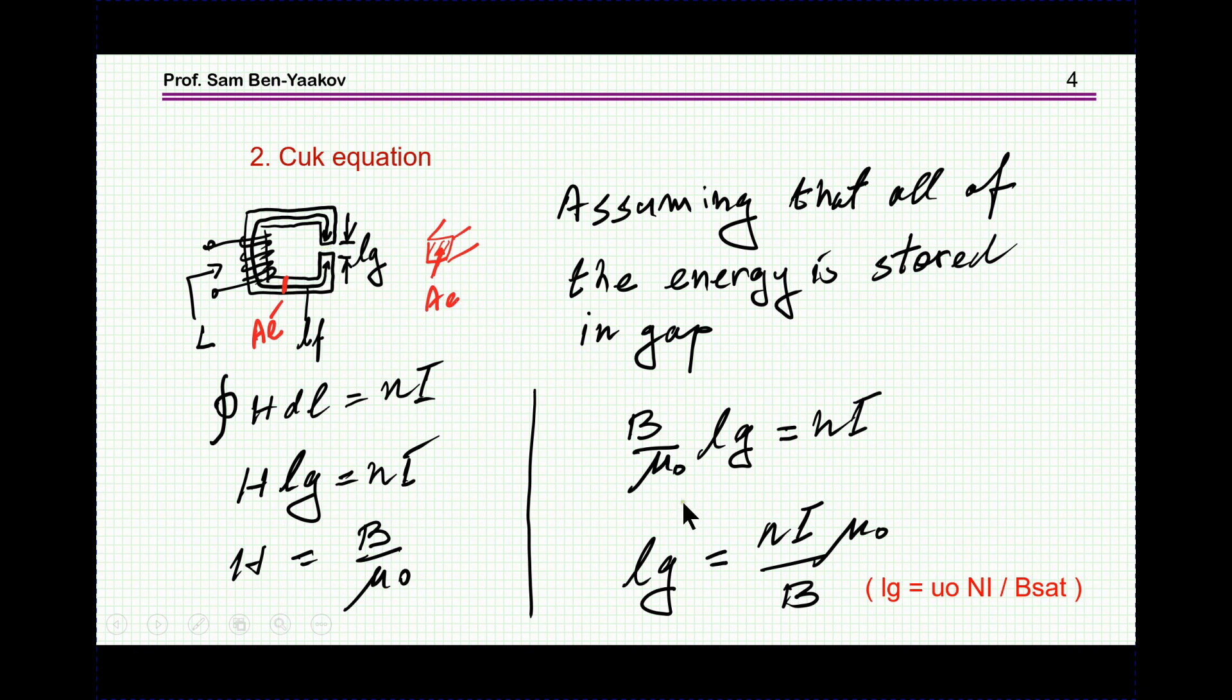So I have HLG equals NI. Instead of H, I write B over mu zero because this is air. And therefore, I find that B over mu zero LG equals N times I, or here it is. This is the Chuck formula.